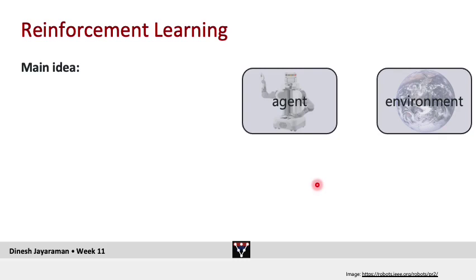We will assume the abstraction of an agent and an environment. The agent is the thing that will learn to perform some actions, operating in a setting we call the environment. For example, a robot agent could be operating on a tabletop grasping objects, or in a kitchen performing cooking. A self-driving car agent operates on a highway. At every time instant, the agent starts by looking at the state of the environment, and that state informs the actions it will execute.